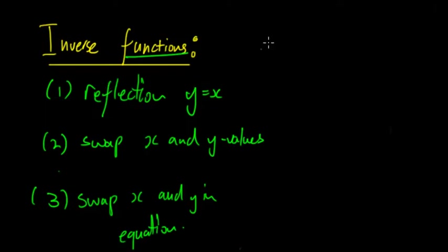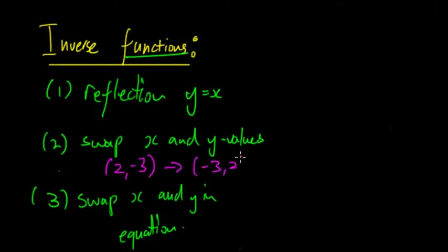With reflection in y = x, that's a good way to visualize and draw it. But technically, the inverse is about swapping the x and y values. So if you have a point like (2, -3), then the inverse of that would be (-3, 2). If you do that for every single point that satisfies the equation, you will find a new equation which can be found by swapping x and y and then rearranging for the inverse.